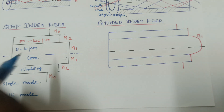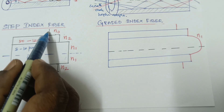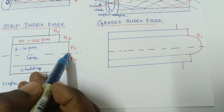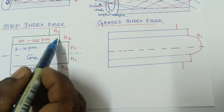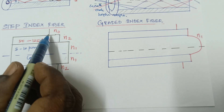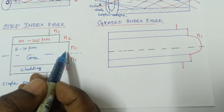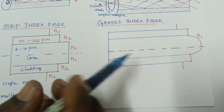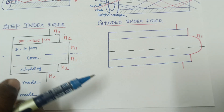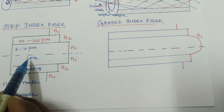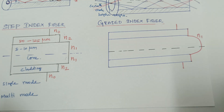From free space to cladding and from cladding to core, the refractive index changes abruptly — a sudden change. In the case of graded index fiber, the refractive index gradually increases rather than changing abruptly. In single mode step index fiber, the core diameter is very small.